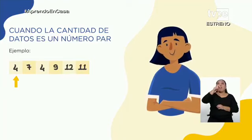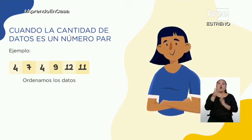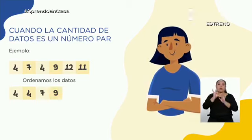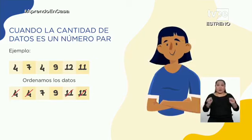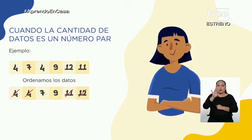Ahora, ¿recuerdan que dijimos que es distinto cuando la cantidad de datos es un número par? Pues veamos cómo calcular la mediana cuando la cantidad de datos es un número par. Me piden hallar la mediana de los datos: 4, 7, 4, 9, 12 y 11. Nuestro primer paso es ordenar los datos en forma ascendente: 4, 4, 7, 9, 11 y 12. Vamos a tachar un número de la izquierda y un número de la derecha para obtener los valores que quedan al centro. Aquí en el centro han quedado dos números. Si tomamos el 7, a un lado tengo dos valores y al otro tres valores, por lo tanto no sería la mediana. Tiene que haber la misma cantidad de valores en ambos lados de la mediana.